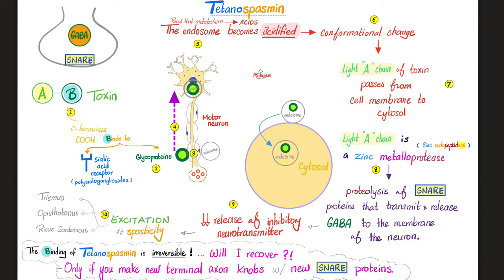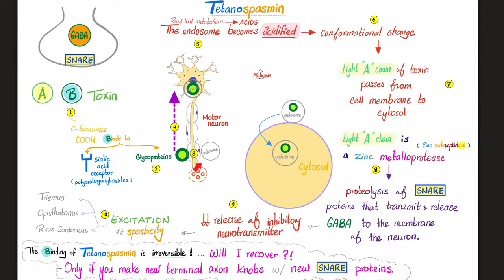Tetanospasmin's binding to SNARE proteins is irreversible — there is no going back. Recovery from tetanus depends on whether you can make brand new axon terminal knobs, because new axon terminals will contain new SNARE proteins that have never encountered tetanospasmin. If you can regenerate new terminal axon knobs, you will recover, since the old SNAREs are irreversibly destroyed.